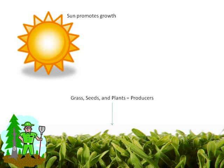The sun is probably the most important aspect of the food chain because it, along with water, starts the growth of the producers. Producers, which you probably know better as plants, include things like grass, seeds, trees, and so on. They are called producers because they can produce or make their own food, but that's a story for a different time.